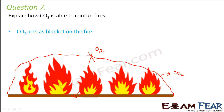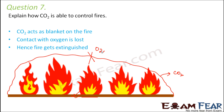Carbon dioxide forms this blanket because it is heavier than oxygen, so it tends to settle down and form a layer below oxygen. It acts as a blanket on the fire, contact with oxygen is lost, and therefore the fire gets extinguished.